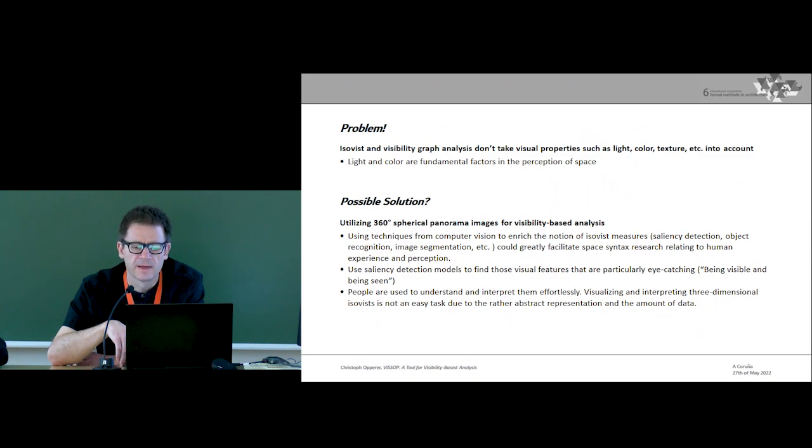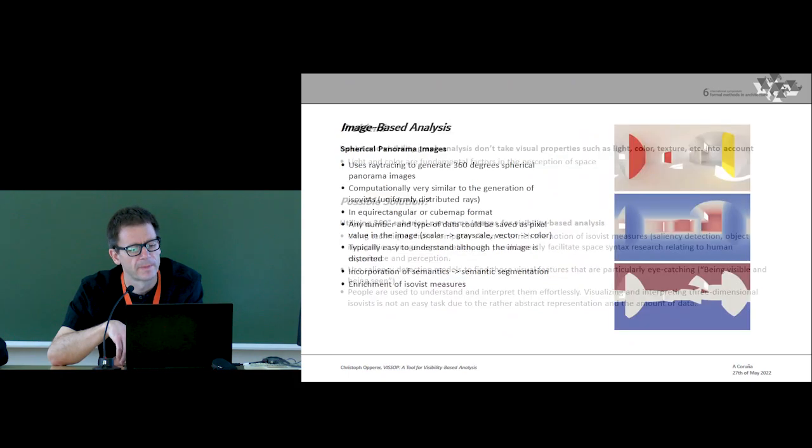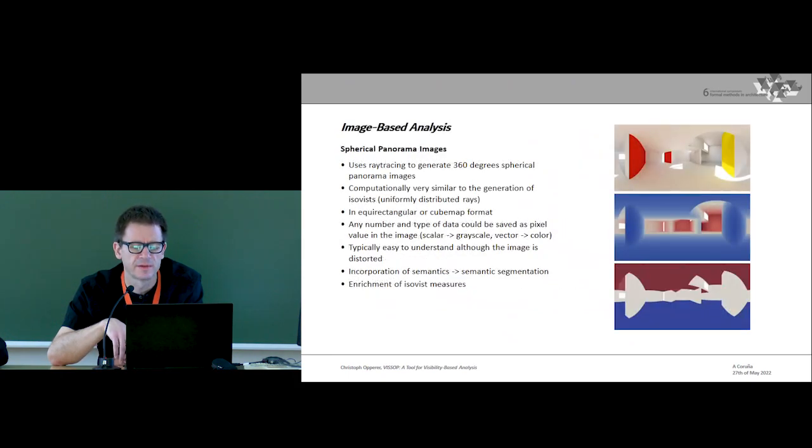ISOVIST and visibility graphs are great, but they don't take visual properties such as light, color and so on into account, which is a fundamentally factor in the perception of architectural space. One possible way to circumvent this problem is to utilize spherical panorama images, which computationally are very similar to three-dimensional ISOVIST, except the representation of space is very different. A big advantage is that three-dimensional data or information is encoded in a two-dimensional image, which is on one hand relatively easy to understand and interpret by people, and on the other hand we can rely on methods from computer vision to support visibility analysis in many different ways.